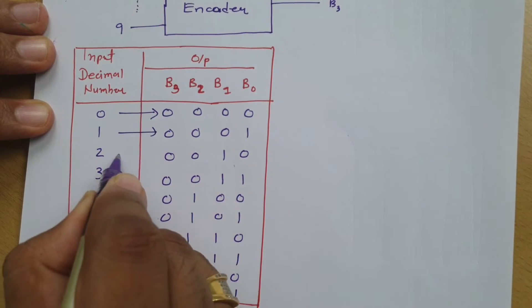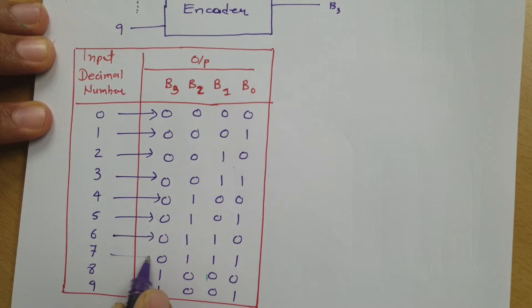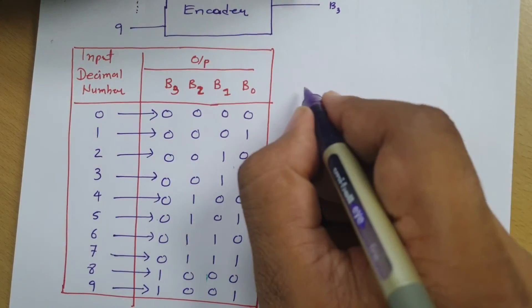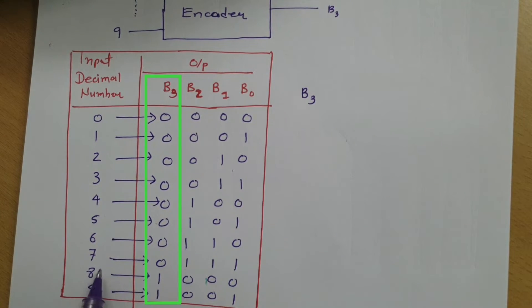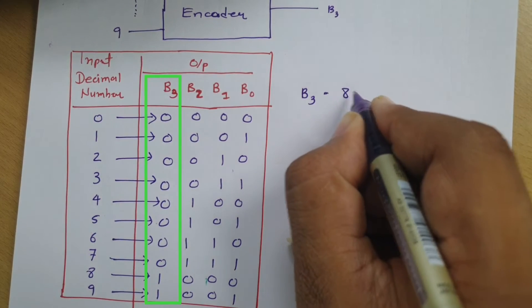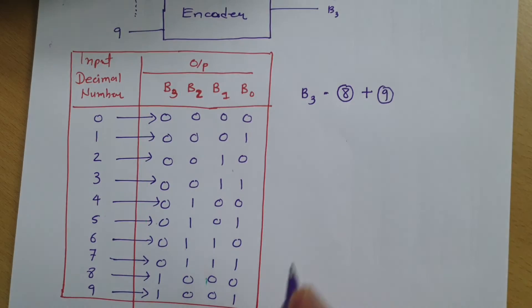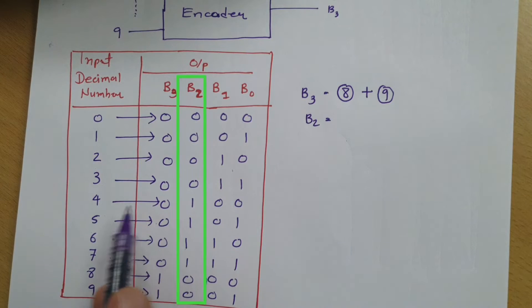Based on this truth table we can now simplify the Boolean expressions. To find B3, it is active high in the case of the 8 and 9 terminals. So B3 equals 8 OR 9. For B2, it is active high when terminals 4, 5, 6, and 7 are on.